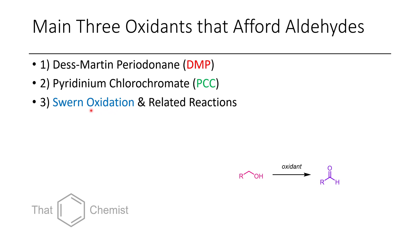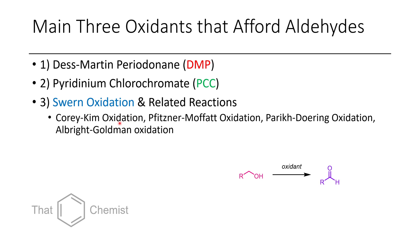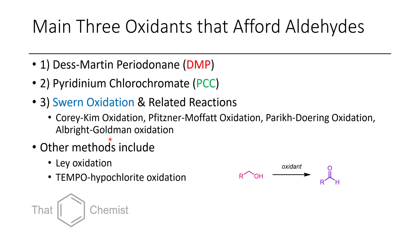There are several other named reactions related to the Swern oxidation — they just use different conditions to generate the active sulfonium reagent. Those include the Corey–Kim oxidation, the Pfitzner–Moffatt oxidation, the Parikh–Doering oxidation, and the Albright–Goldman oxidation. There are also a couple of other methods commonly seen in total synthesis: the Ley oxidation, which uses TPAP, a ruthenium-based oxidant with something to regenerate it catalytically, and a TEMPO/hypochlorite oxidation. We're going to focus on the main three types.